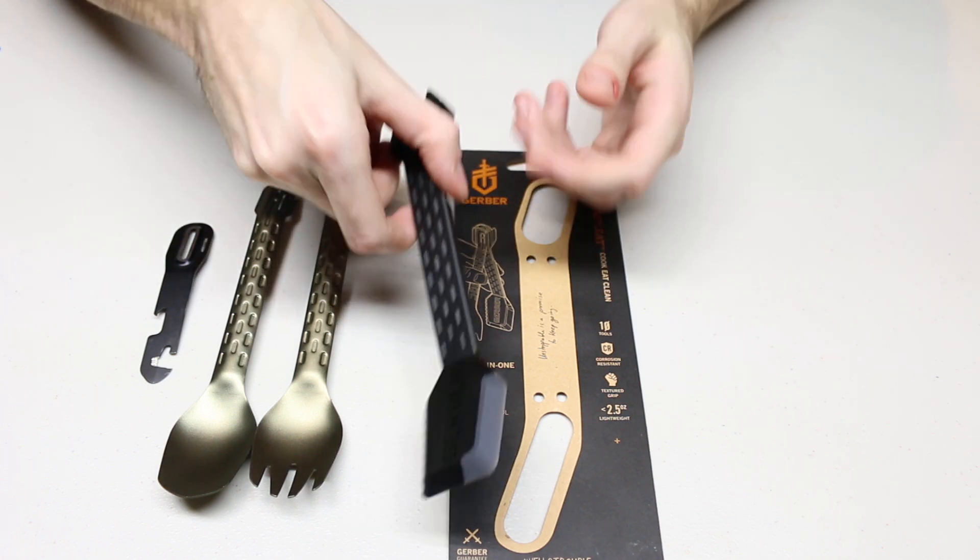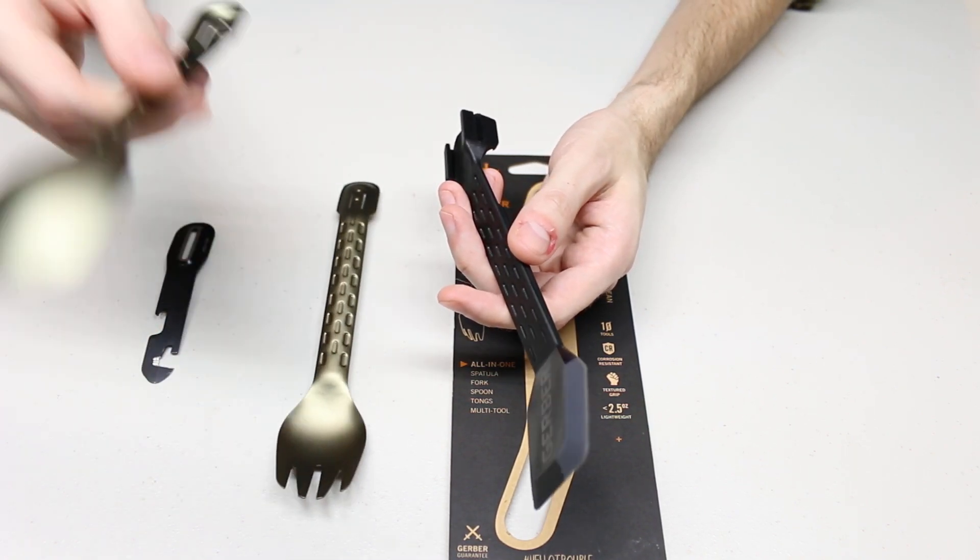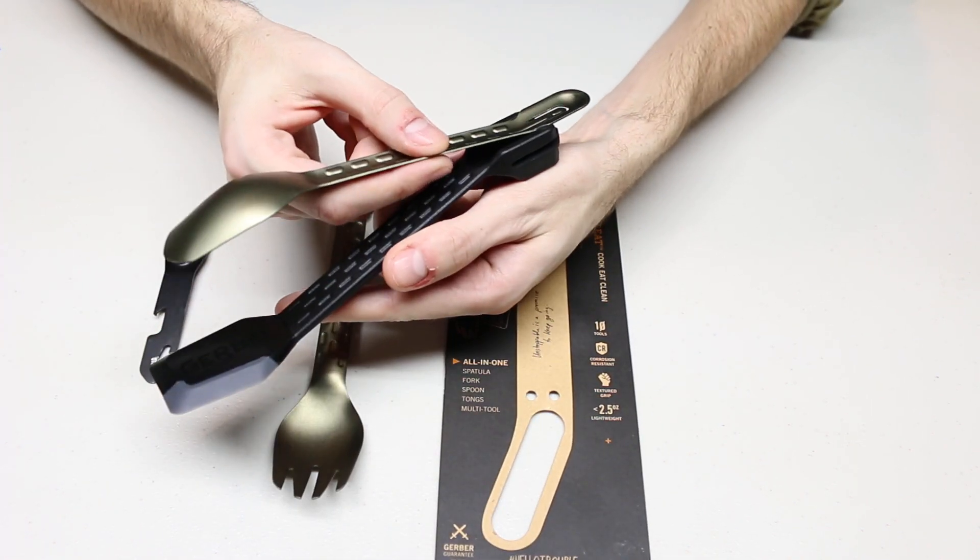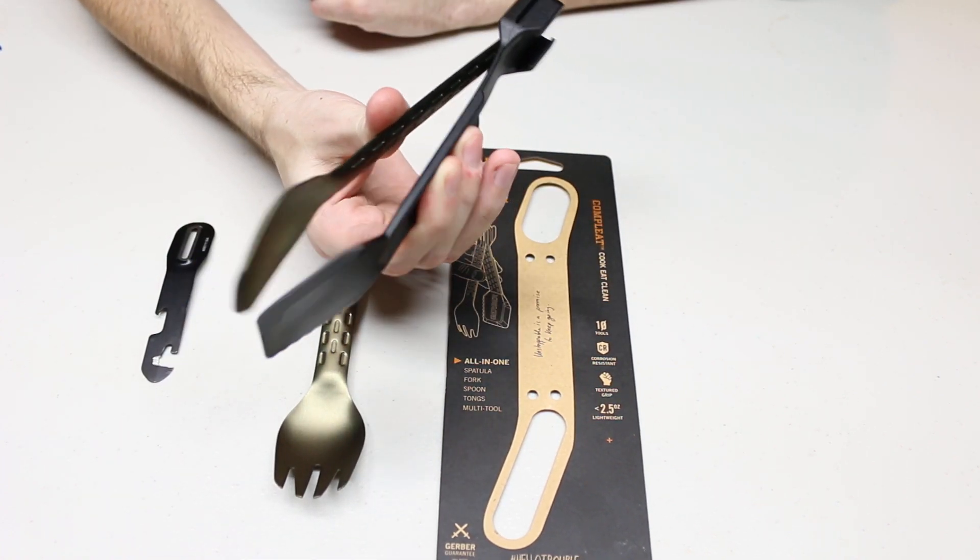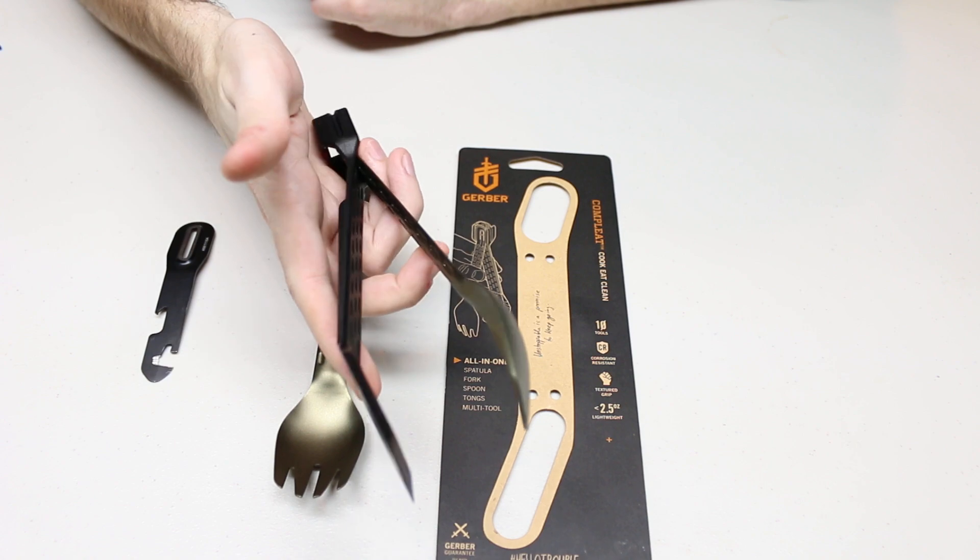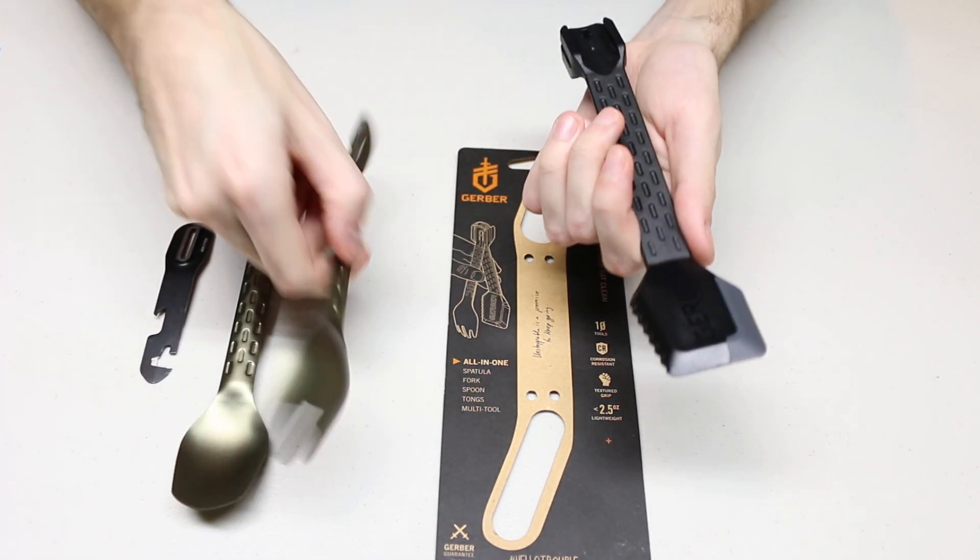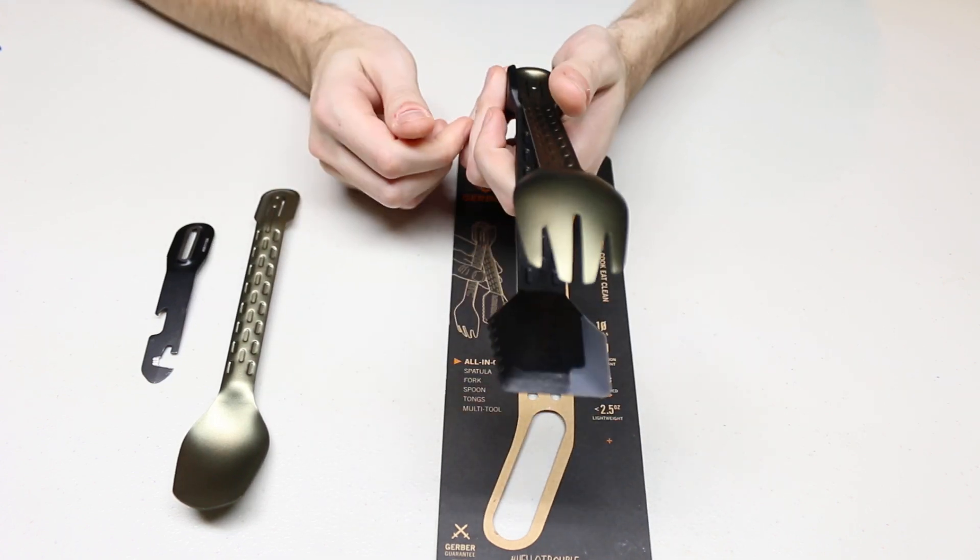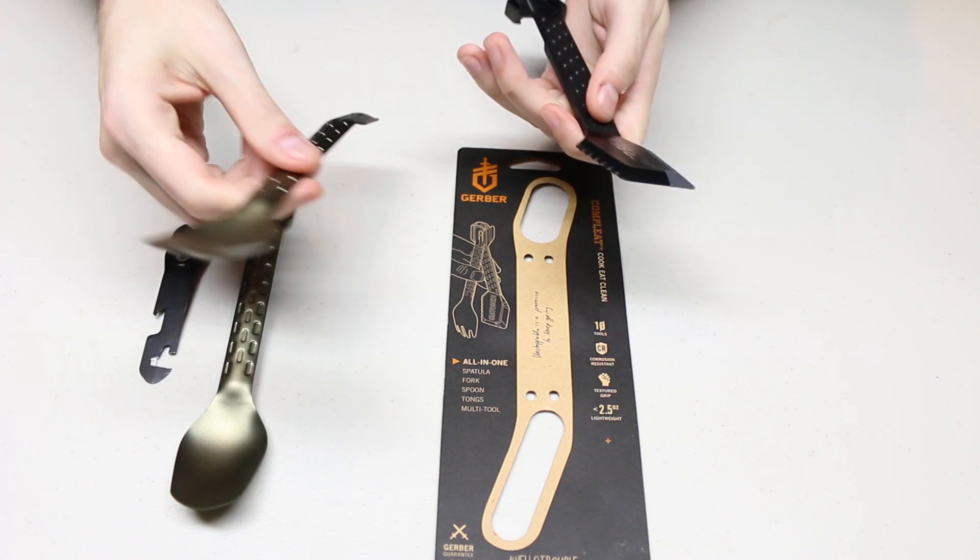So how do the tongs work? You actually take the spatula and either the fork or the spoon, let's use a spoon, and you just slide it in just like that and you have a set of tongs. Very easy to use right there. And you can use the fork also if you prefer to have more pointed tongs. Just a very innovative design.